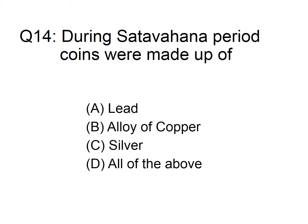During the Satavahana period, coins were made up of option A: lead, B: alloy of copper, C: silver, D: all of the above. The answer is option D, all of the above. The coins of the Satavahana period were made up of lead, silver, and alloy of copper.